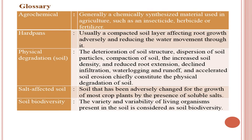Before that, we will explain some terminology which is often difficult. First, agrochemical: generally a chemically synthesized material used in agriculture such as insecticide, herbicide, or fertilizer. These are agrochemicals, mostly synthetic in nature, like pesticides.